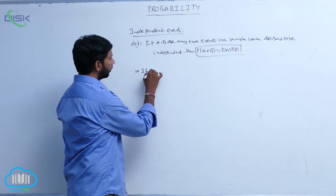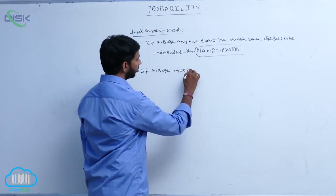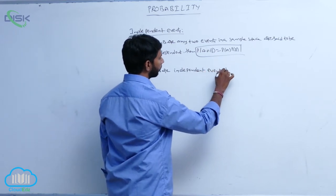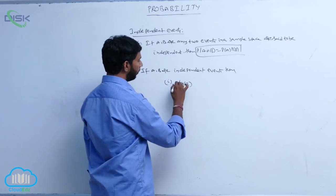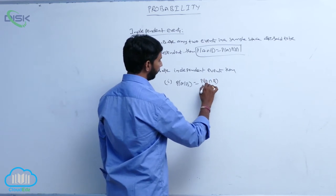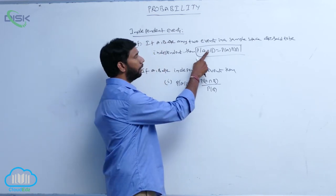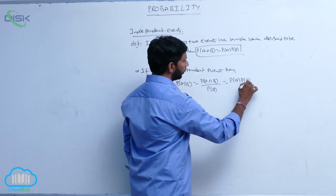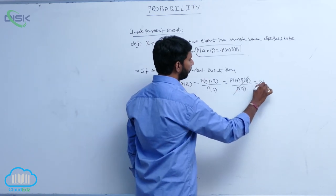Suppose if A, B are independent events, then P of A given B is equal to P of A intersection B by P of B. Since A, B are independent events, P of A intersection B equals P of A into P of B, divided by P of B. Here P of B gets cancelled, so it is equal to P of A.